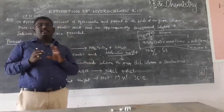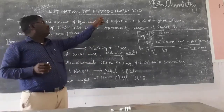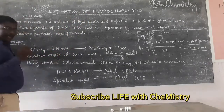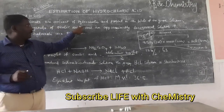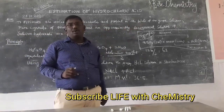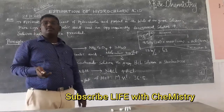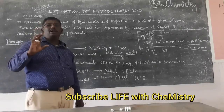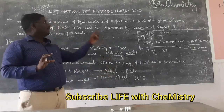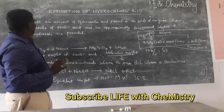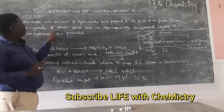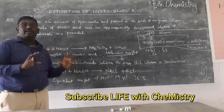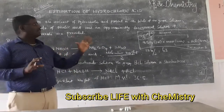This is the estimation of hydrochloric acid. We will estimate the amount of hydrochloric acid present in the whole of the given solution. The scheme involves the pure crystals of oxalic acid and the approximately decimolar solution of sodium hydroxide. We explain the amount of hydrochloric acid present in the whole of the given solution.